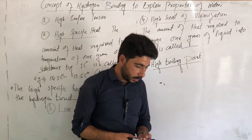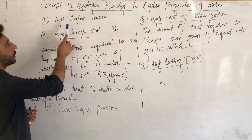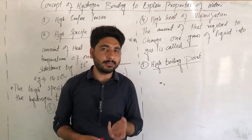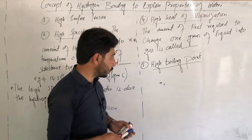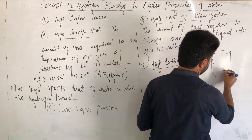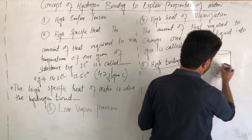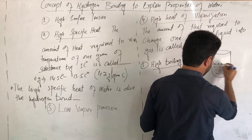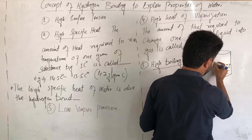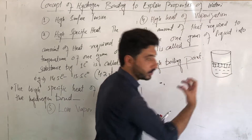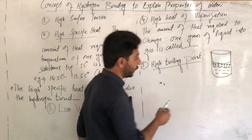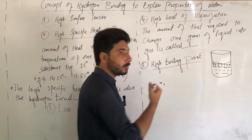Our first point is surface tension. What is meant by surface tension? Consider a glass filled with water. The water molecules at the top surface — the top-layer molecules — experience a downward force from the molecules below them. This can be thought of as a membrane that can be stretched.